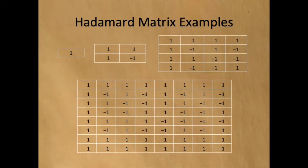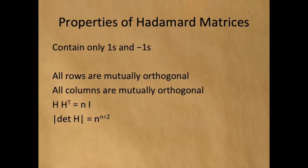Hadamard matrix times its transpose equals n times the identity matrix, and the absolute value of the determinant of the Hadamard matrix equals n raised to the n over 2. These properties are listed here. The last four properties are equivalent to each other.